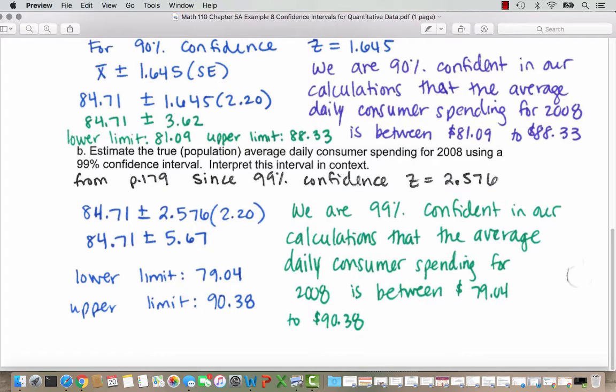Our structure for the confidence interval still starts with our sample mean $84.71, but we're going to add and subtract 2.576 times the standard error because now we're 99% confident, and that's between 2 and 3 standard errors. So 2.576 times 2.20 gives us $5.67. That $5.67 we could call the margin of error because that's how much we add and subtract from the sample mean. The sample mean is the center of our interval, and we subtract and add the margin of error to find the lower limit and upper limit.